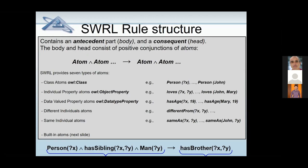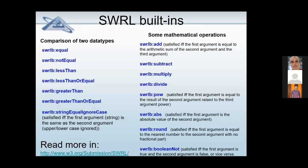For example, 'has sibling' is a property — who has a sibling and what that sibling is, and the second one belongs to class Man. You can see what kind of rule is described here: if someone is a person and has a sibling who is a Man, then this person has a brother. So you infer a new relation between these two which doesn't remove the previous ones — they are still remaining, and you just infer an additional relation.